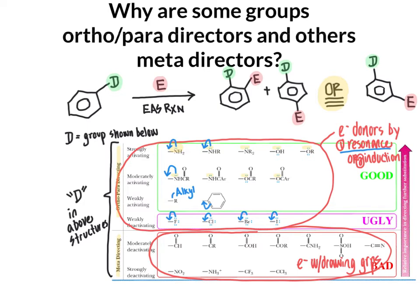The general trend is that groups electron withdrawing by resonance or induction are going to be meta directors, while groups electron donating by resonance or induction are going to be ortho-para directors — ranking resonance as the most important factor and induction as second most important. So why is that the case? The mechanisms that lead to the ortho-para products versus the meta products are your main clue about regioselectivity, and that's going to be true here as well.